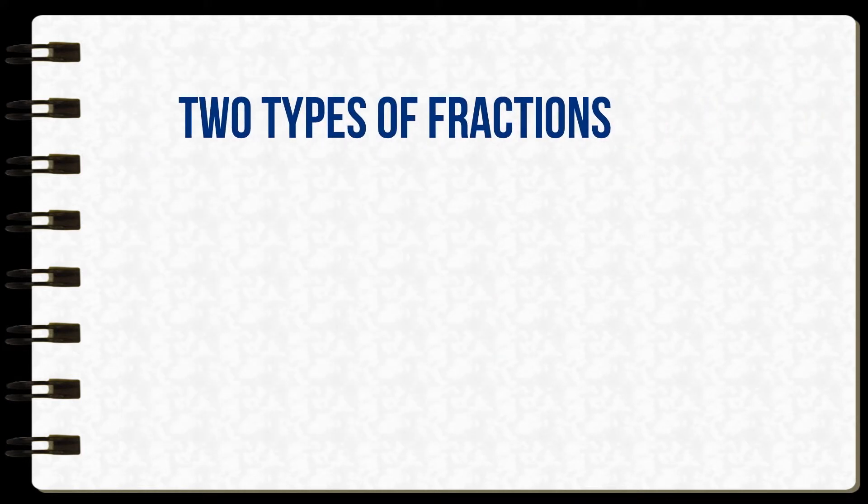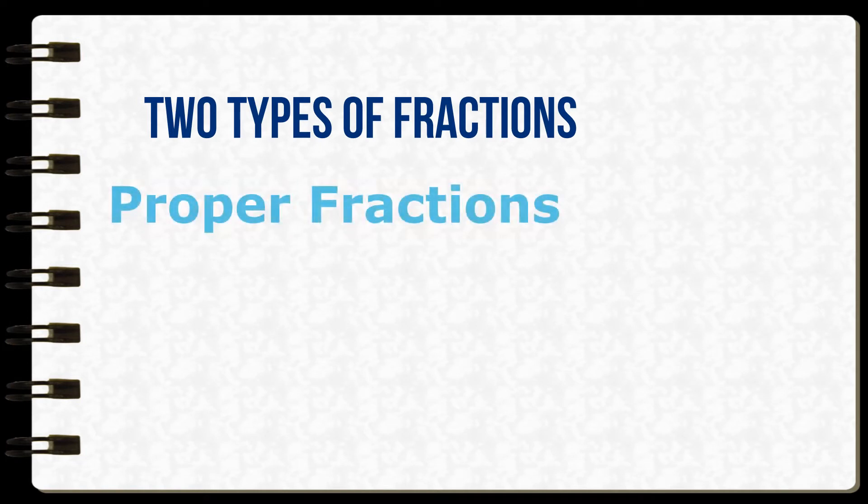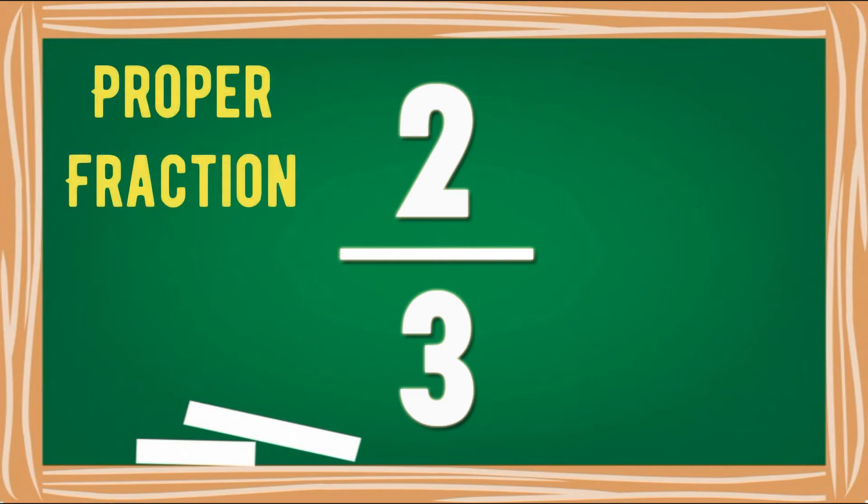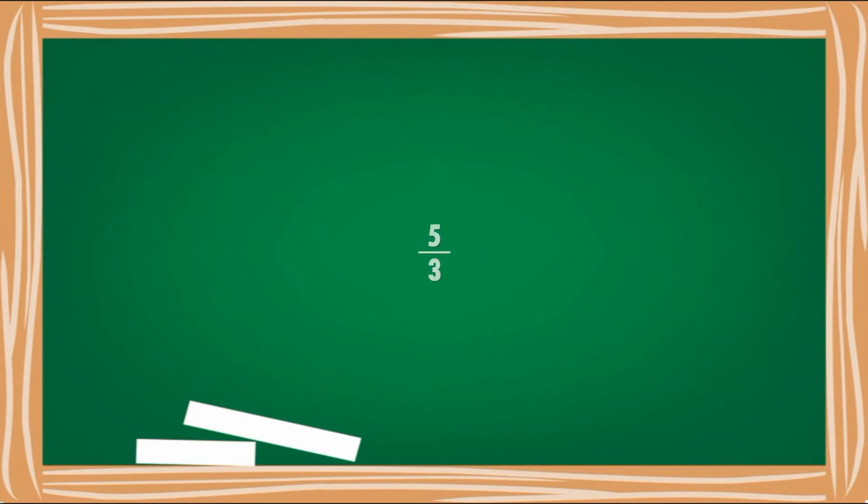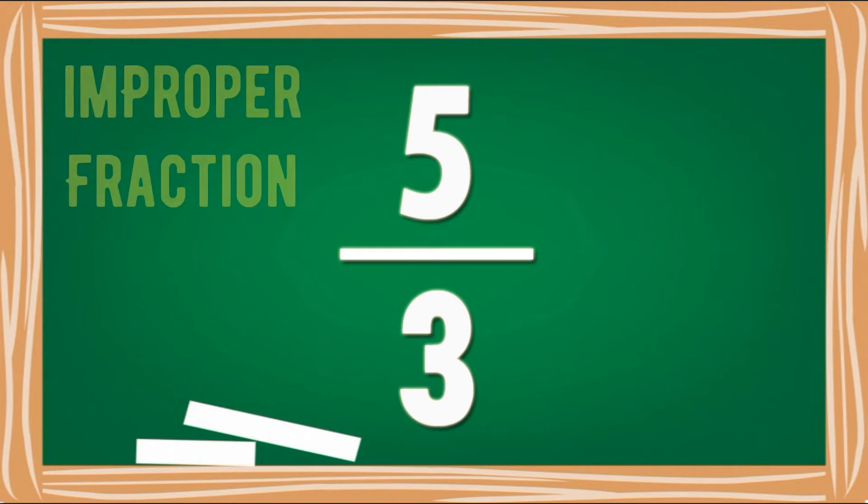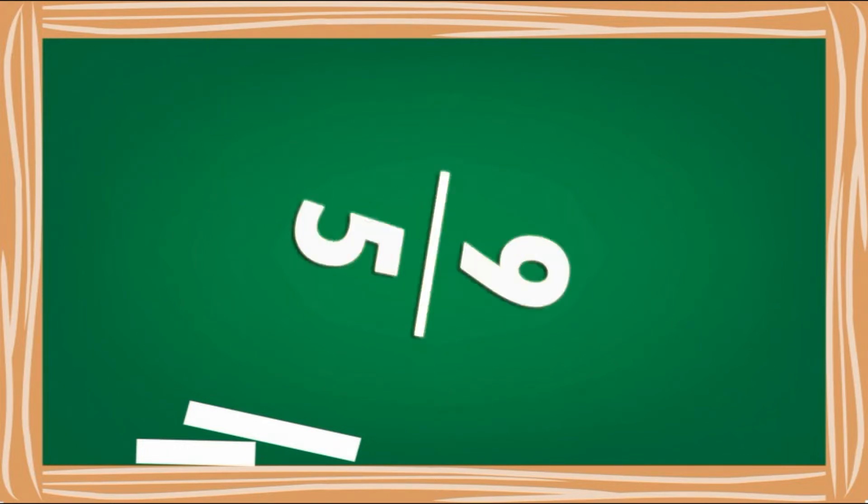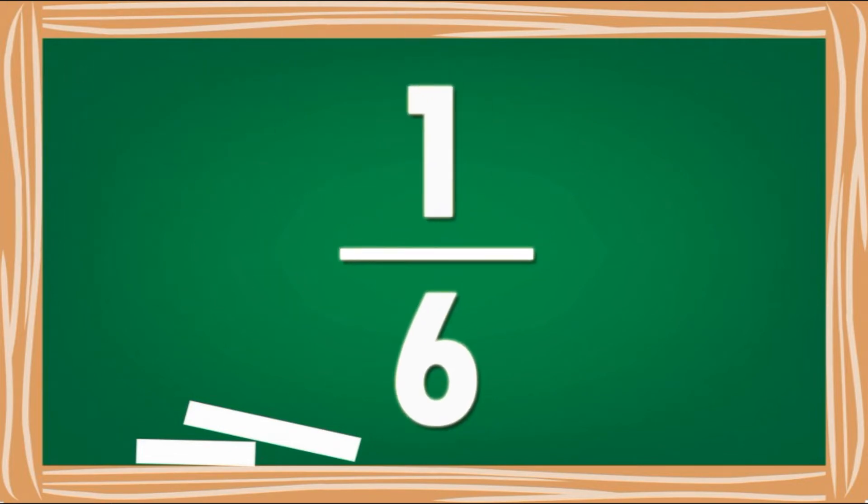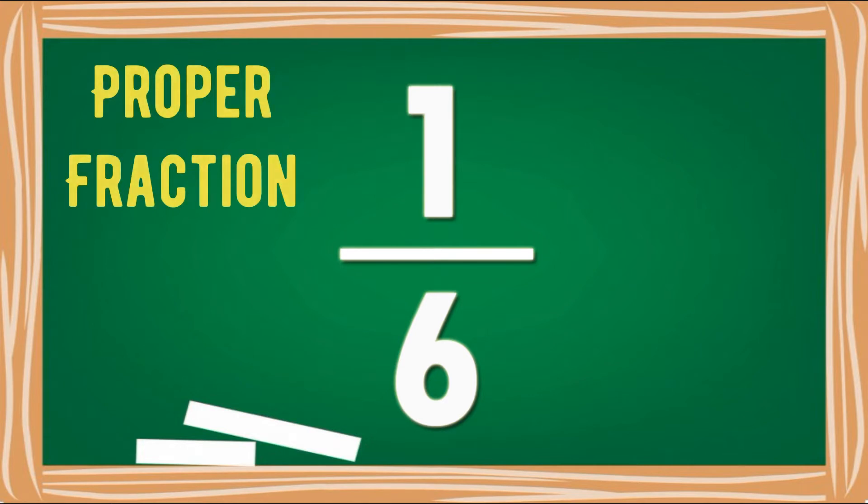So basically there are two types of fractions: proper and improper fractions. Can you guess which fraction is proper and improper? Two-thirds: proper fraction. Five-thirds: improper fraction. Nine-fifths: improper fraction. One-sixth: proper fraction.